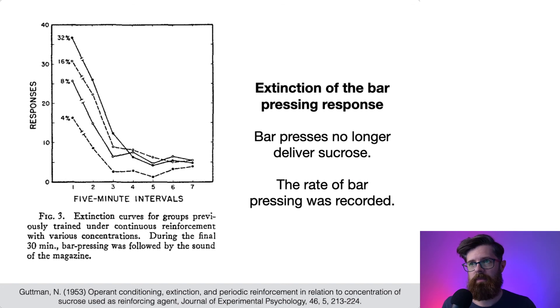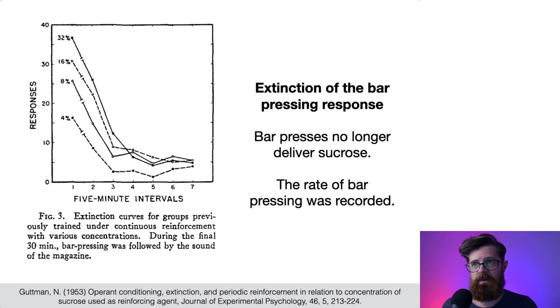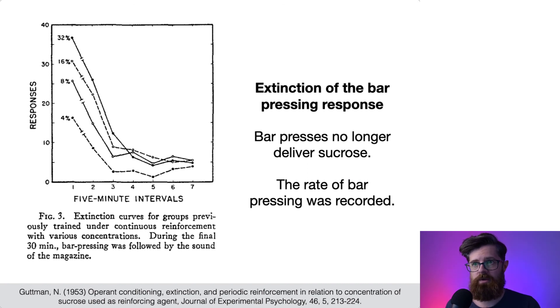What we can see is that rats who were given higher concentrations of sucrose perhaps started off with a greater number of bar presses the next day. But all of the groups, once the sucrose was taken away, started pushing the bar a lot less. So that basically is a quick example of operant conditioning and extinction of that conditioning.